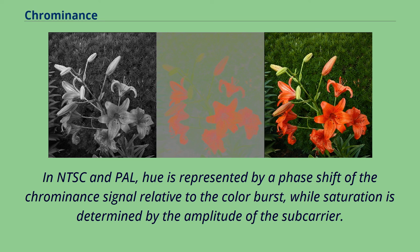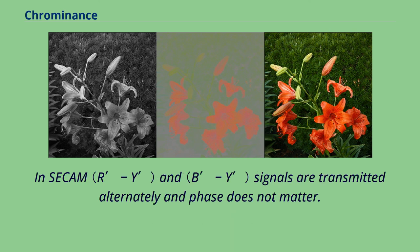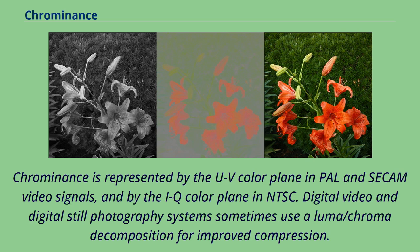In NTSC and PAL, hue is represented by a phase shift of the chrominance signal relative to the color burst, while saturation is determined by the amplitude of the subcarrier. In SECAM, signals are transmitted alternately and phase does not matter. Chrominance is represented by the UV color plane in PAL and SECAM video signals, and by the IQ color plane in NTSC.